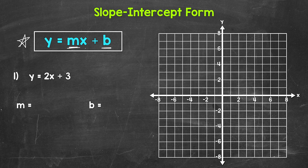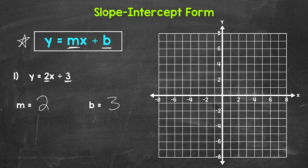Let's jump into number one, where we have y equals 2x plus 3. So we need to graph this line. Our slope is 2 and our y-intercept is 3. Now with our slope being a whole number, I'm going to write it in fractional form. Because remember, slope equals rise over run. Writing this in fractional form will make our rise and run more clear. All we need to do is put 2 over 1, so 2 is the rise and 1 is the run.